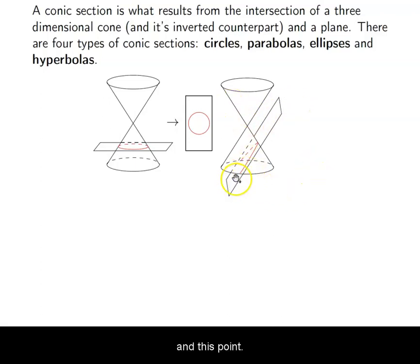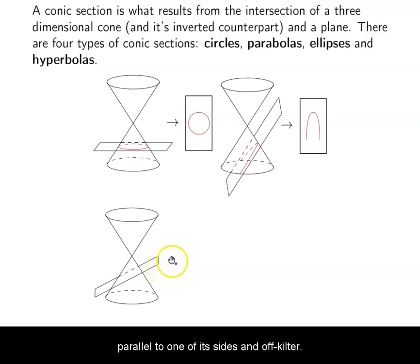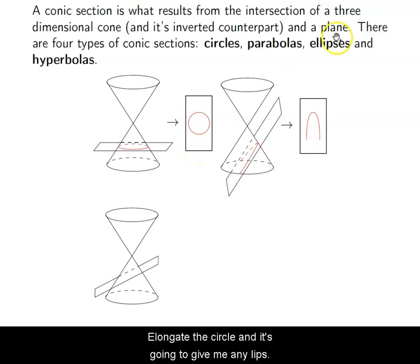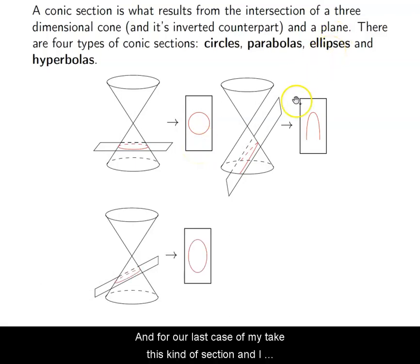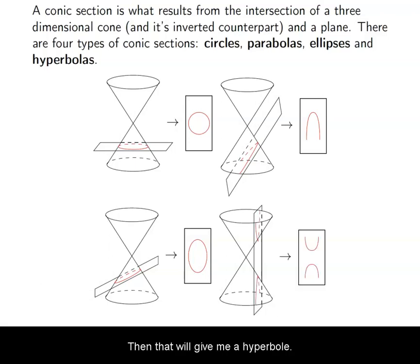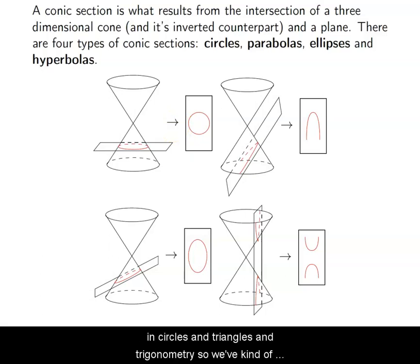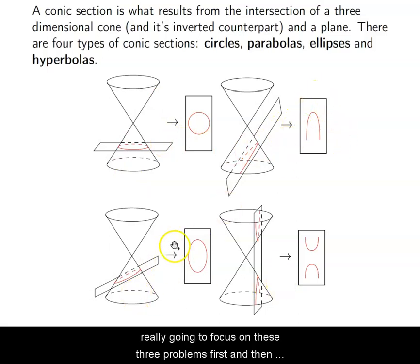The intersection of the cone and the plane will look like that — and that is a parabola. If I intersect at an angle that is neither parallel to the base nor parallel to one of its sides — kind of off-kilter — that elongates the circle and gives me an ellipse. If I intersect so that it is at a 90-degree angle with the base, that gives me a hyperbola. Those are the four conic sections. We've covered circles extensively, so we'll focus on parabolas, ellipses, and hyperbolas.